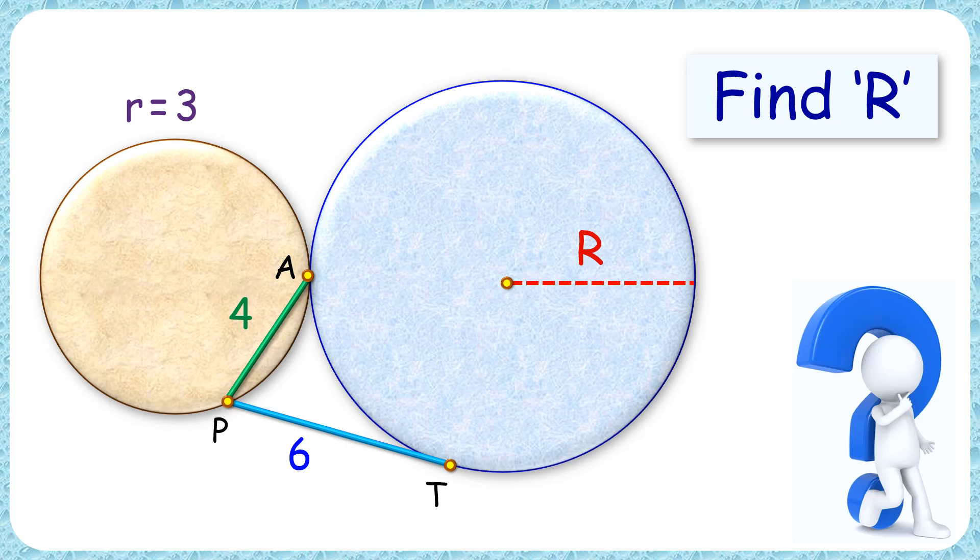In this interesting question, we have two circles touching each other at point A. The length of chord PA is 4 centimeters, length of tangent PT is 6 centimeters, radius of the smaller circle is 3 centimeters. With this limited data, we have to find the radius of this bigger circle.